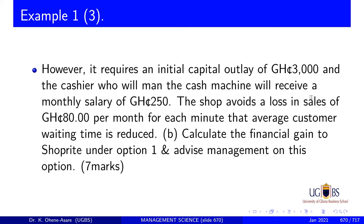However, the second option requires an initial capital outlay of 3,000 Ghana cedis, and the cashier who mans that machine will receive a monthly salary of 250 Ghana cedis. Now the shop owner avoids a loss in sales of 80 Ghana cedis per month for each minute that average customer waiting time is reduced. So whether you use the employee approach or the machine approach, the shop owner saves 80 Ghana cedis per minute every month. Calculate the financial gain under option one and advise management.